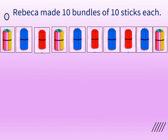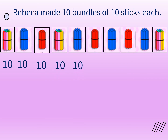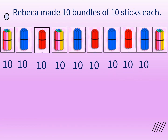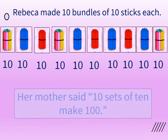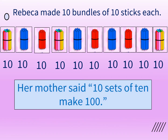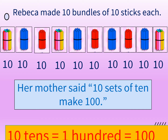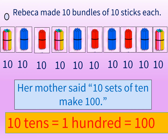Rebecca made 10 bundles of 10 sticks each. Let's count with her: 1 ten, 2 tens, 3 tens, 4 tens, 5 tens, 6 tens, 7 tens, 8 tens, 9 tens and 10 tens. Her mother said 10 sets of 10 tens make 100. 10 tens is equal to 100.